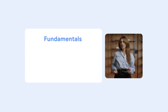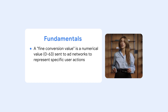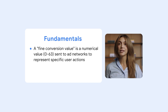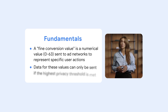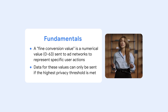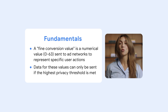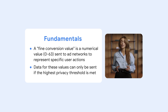There are some basic fundamentals you should understand when designing your schema. A fine conversion value in your SCAN schema refers to a numerical value of 0 to 63 which is sent to ad networks to represent specific user actions within a mobile app. This allows advertisers to measure campaign performance and optimize for valuable conversions even with Apple's privacy restrictions. Data for these values can only be sent if the highest privacy threshold is met. By assigning fine conversion values to different in-app events, advertisers can gain more nuanced insights into user behavior and campaign performance, allowing for more effective optimization strategies within the privacy constraints of SCAN.